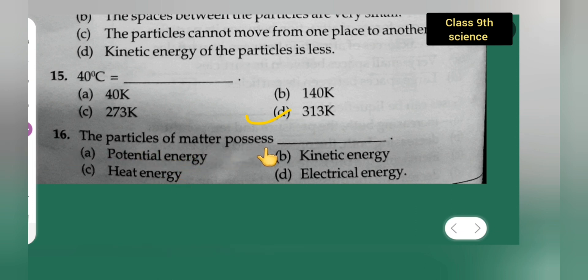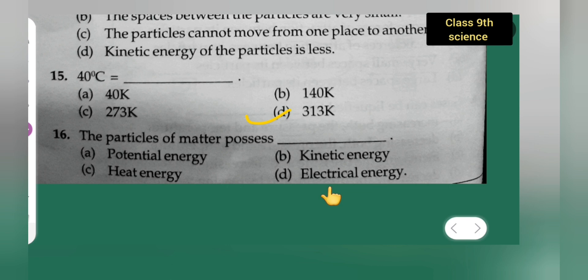Question 16: The particles of matter possess — option A is potential energy, option B is kinetic energy, option C is heat energy, option D is electrical energy. The correct answer is kinetic energy — option B.